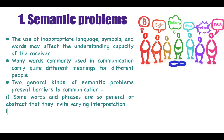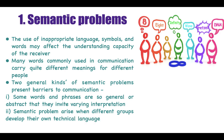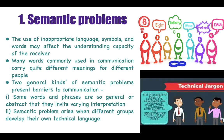Another type of semantic problem arises when different groups develop their own technical language. For example, specialists such as scientists, engineers, or doctors use different technical words when explaining something to unspecialized people. When those unspecialized people cannot understand those technical jargons, that causes a semantic problem and a barrier to effective communication.